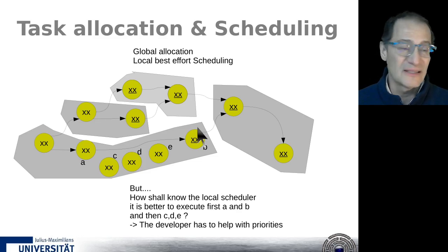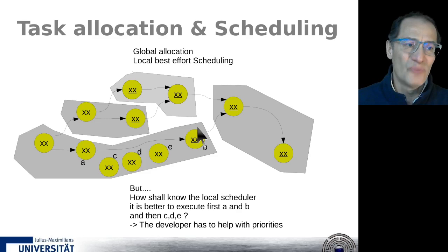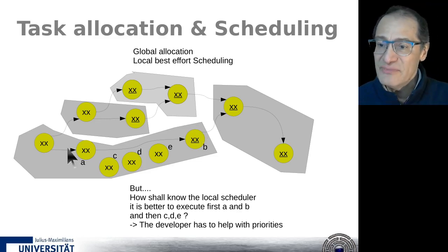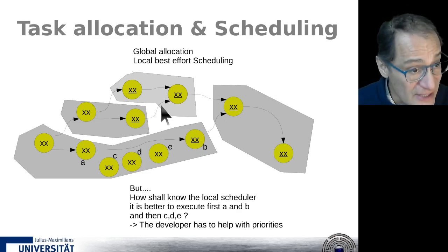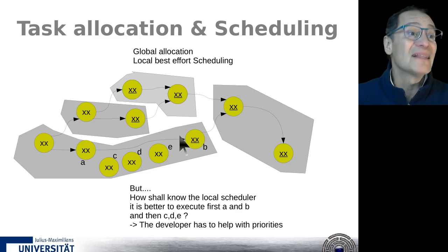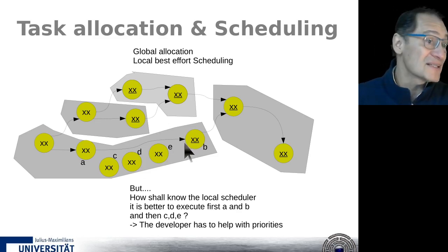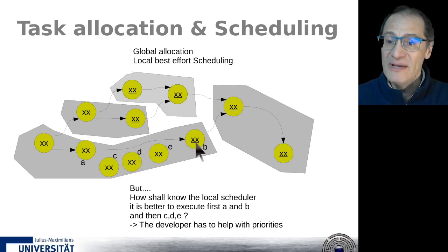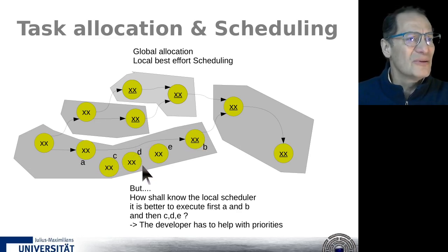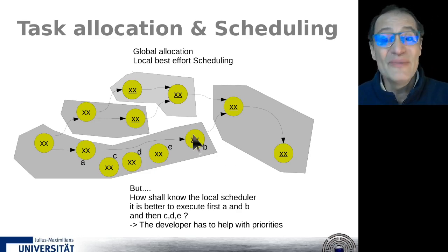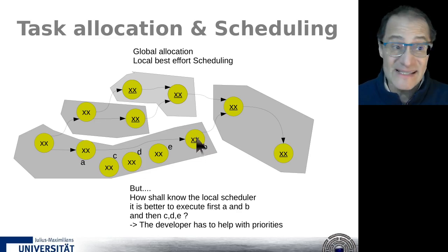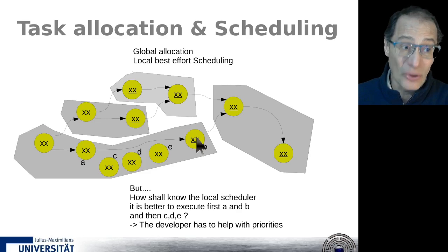Now we have one more complication. In the solutions we found, a distribution is fixed: this task shall be in this node, this task in that node, with fixed communication links. But now maybe it is not fixed - maybe we have the opportunity at runtime, while executing, to move one task to another node. For example, we see one node is doing nothing and another is doing too much, so we decide to move a task.